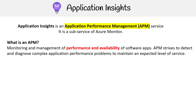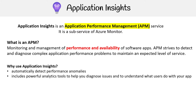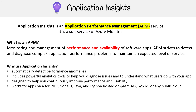APM strives to detect and diagnose complex application performance problems to maintain an expected level of performance. Application Insights automatically detects performance anomalies and includes powerful analytics tools to help you diagnose issues and understand what users do with your app. It's designed to help you continuously improve performance and usability, and works for apps built with .NET, Node.js, Java, and Python, hosted on-premise, hybrid, or any public cloud.